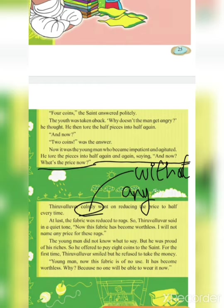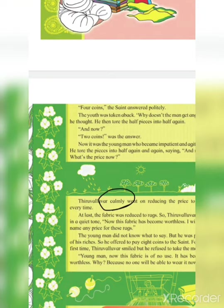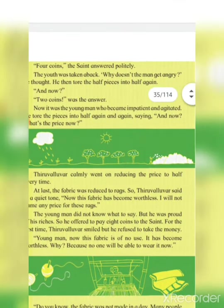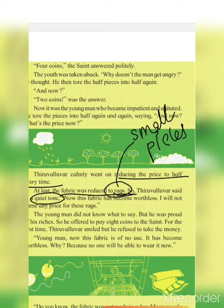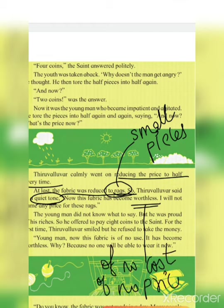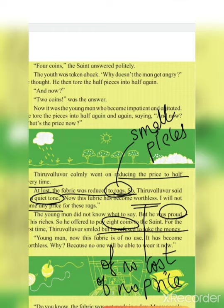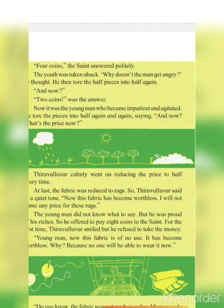In this part, you can understand that the two rich men came to make Thiruvalluvar impatient and agitated and to make fun of him, but they themselves became impatient and agitated while trying to make him angry. Thiruvalluvar calmly went on reducing the price to half every time the young persons tore the cloth. He calmly decreased the price into half of the remaining cloth each time.